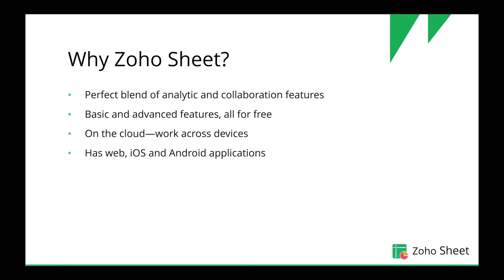So why Zoho Sheet? Zoho Sheet is an online spreadsheet application that gives you a perfect blend of analytic and collaborative features. By analytic, Zoho Sheet gives you more than 350 functions by default, charts, pivot tables, pivot charts, etc. By collaboration, Zoho Sheet gives you the ability to work in real time with your team, make range-level comments, and also view change logs based on date, user, etc. It provides all these features free of cost without any limitations, and all your files are stored on the cloud so you can access them from any device.